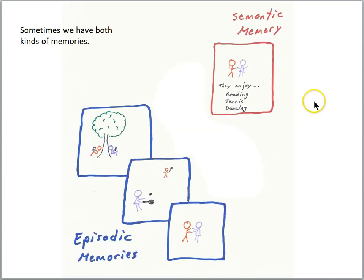Let's do another example to show the difference between episodic and semantic. Let's say somebody asks us what do you know about such-and-such a couple. So we know two individuals are a couple, and we retrieve information from our semantic memory: they enjoy reading, tennis, and dancing.